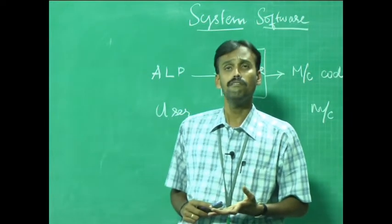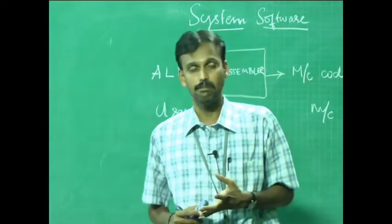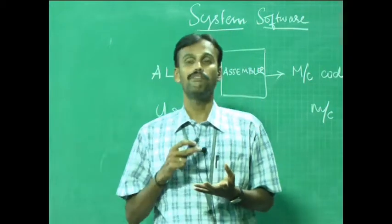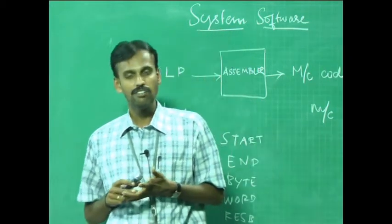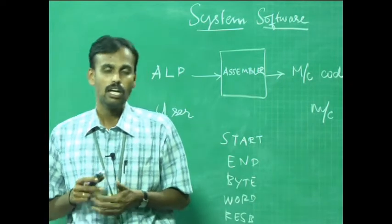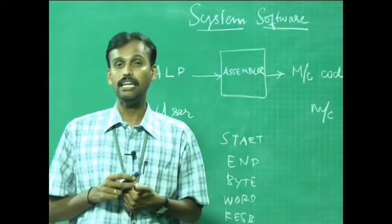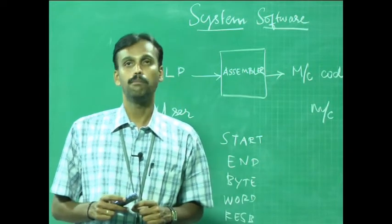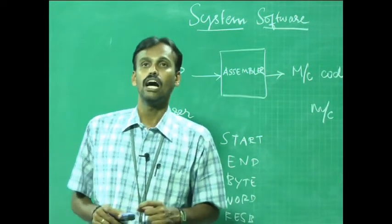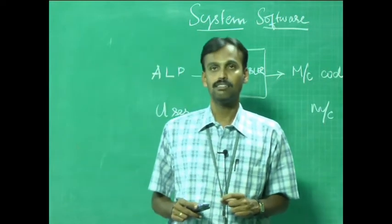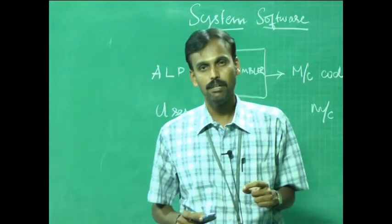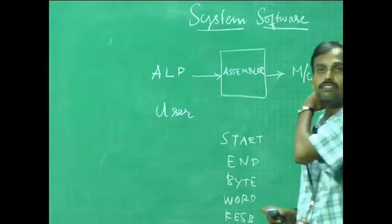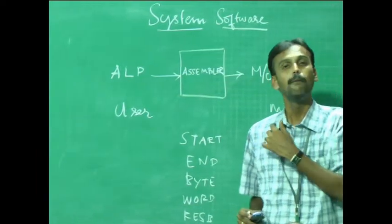Machine independent assembler features include literals, symbol defining statements, expressions, program blocks, control sections, and linking. This has been a broad introduction to assemblers and how they translate a given assembly language program into a machine program or machine code.